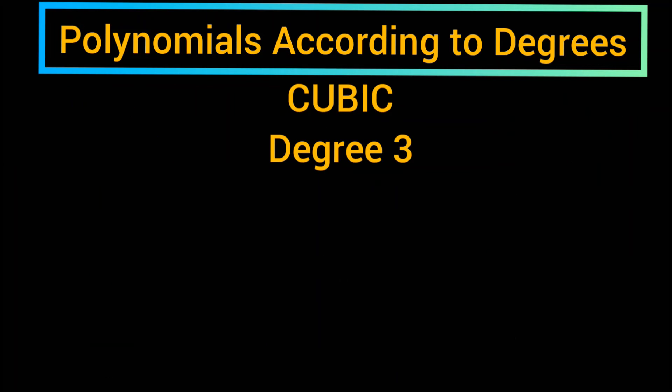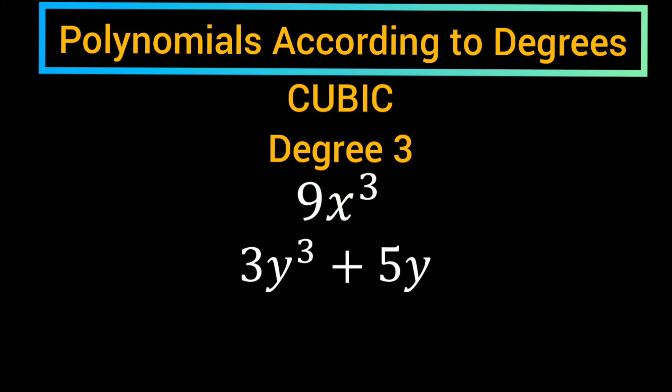Cubic: degree 3. Examples: 9x cubed, 3y cubed plus 5y, m cubed plus 9m cubed.